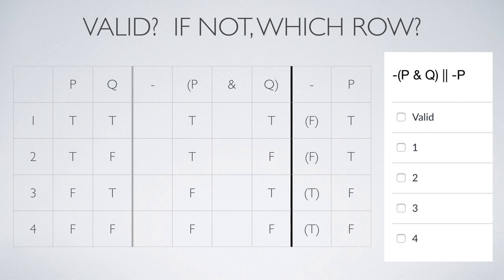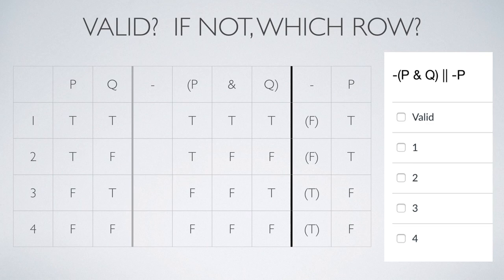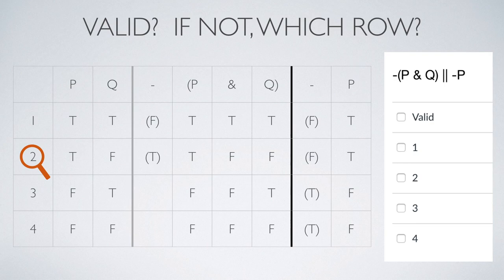We start looking at the premise and work from the inside of the parentheses out. Conjunctions are easy — if at least one atomic proposition is false, the conjunction is false. The bottom three rows work that way: in row 2, Q is false; in row 3, P is false; in row 4, both P and Q are false. So those three are false, leaving the top one as true. Since that conjunction in row 1 is true and is negated, that negation is false. We need a true premise and a false conclusion — we get that with row 2. That premise is true and the conclusion is false, so this argument is invalid. You'd mark row 2 in your answer column.